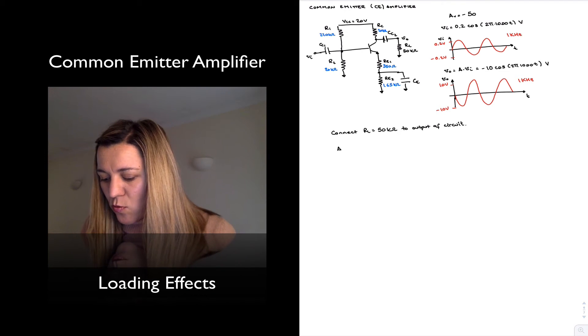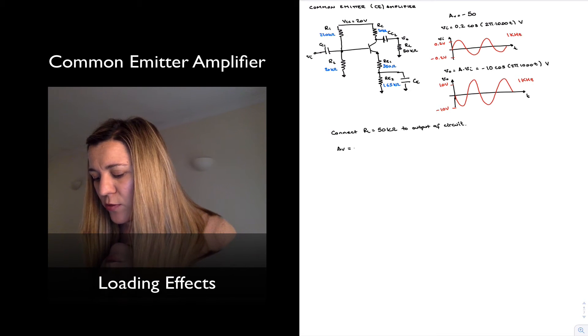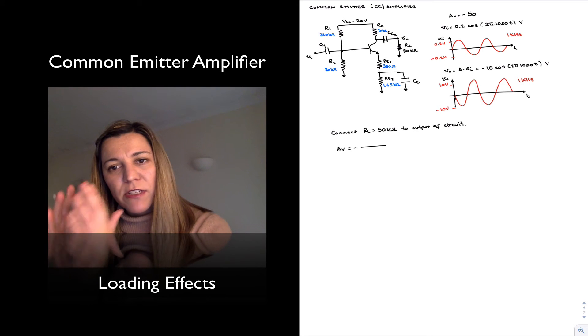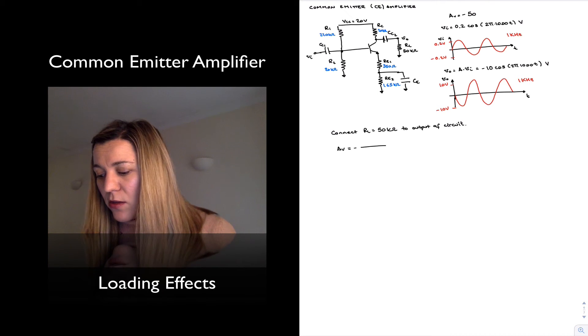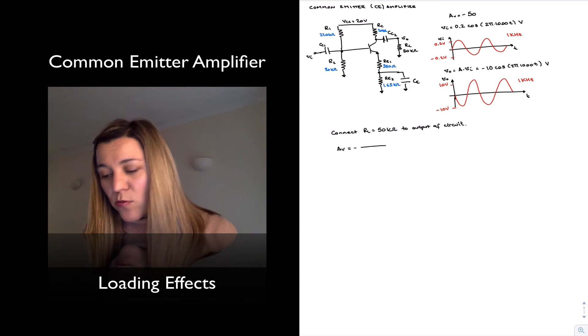And now, if I am to calculate my new voltage gain, it's going to be negative total resistance at the collector divided by total resistance at the emitter. The overall resistance at the collector now, when I look at it, is actually, if I look at it from V out,